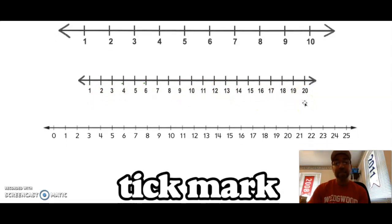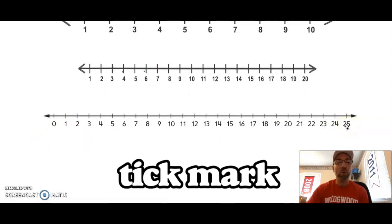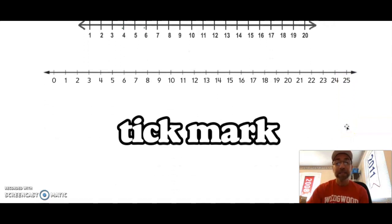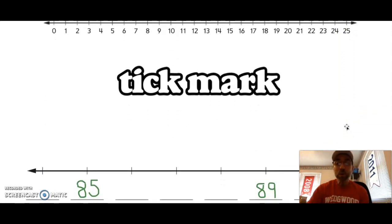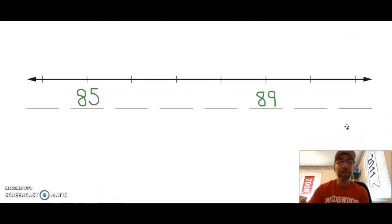And then the third number line looks just like those number lines that you have on your math mat, and that number line starts at zero and goes all the way to 25. So today we're gonna start by reviewing something we learned the other day, and that was how we can have a number line that is missing some numbers.